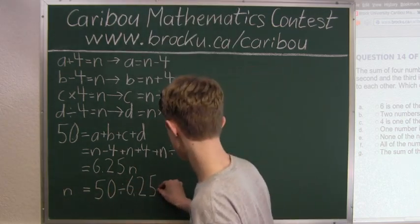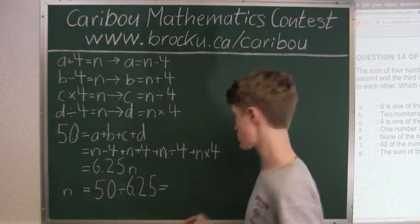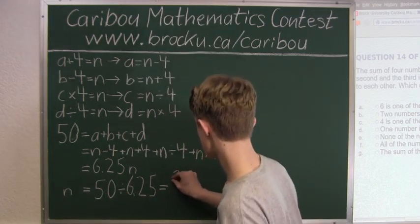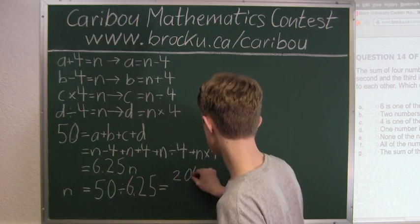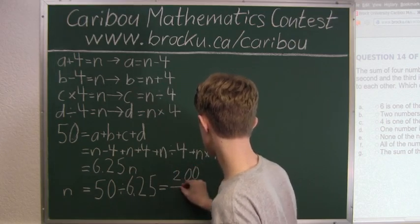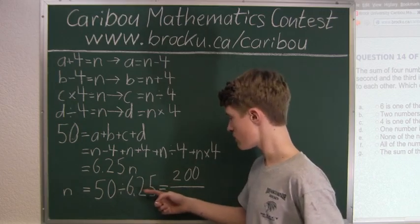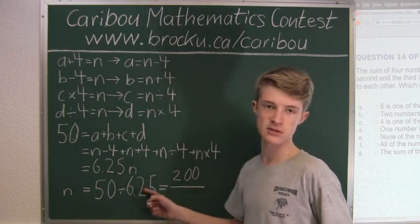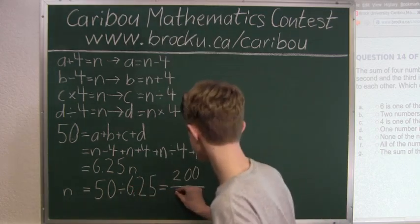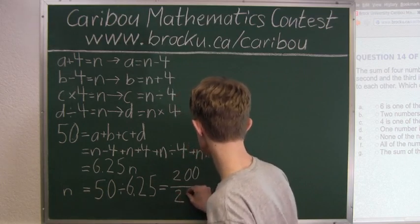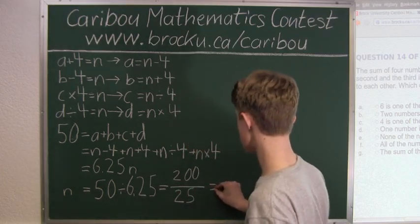So that would equal fifty times four is two hundred, and six point twenty-five times four, we have twenty-four plus one is twenty-five, which equals eight.